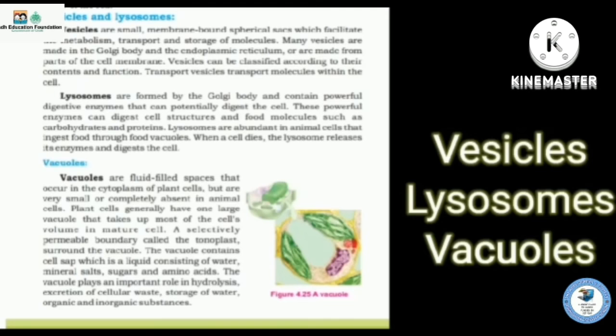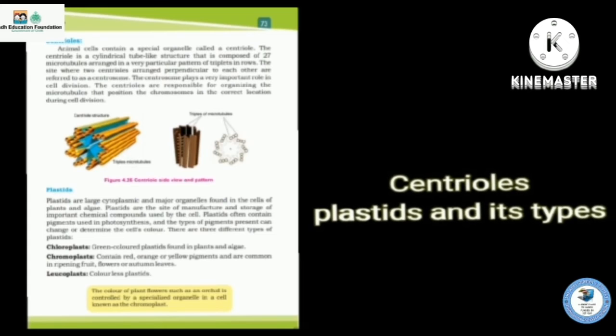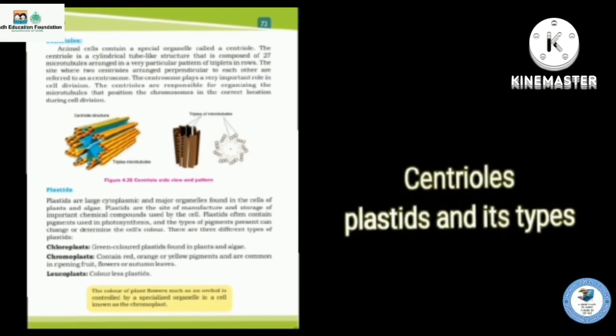Then Golgi bodies, it contains vesicles, lysosomes and vacuoles. Vacuoles are present in the cytoplasm of plant cell. Then centrioles and plastids and its types.